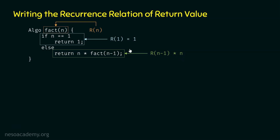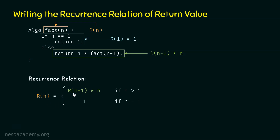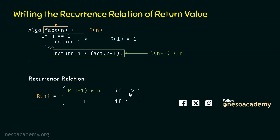So, one thing is clear: if n is equal to 1, then R(n) is equal to 1. If n is greater than 1, then R(n) must be equal to R(n-1) times n. Now we can easily write the recurrence relation. The recurrence relation must be R(n) = R(n-1) × n if n is greater than 1; otherwise, if n is equal to 1, then R(n) is equal to 1.